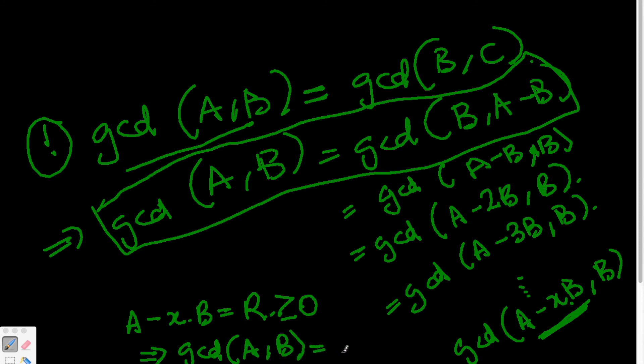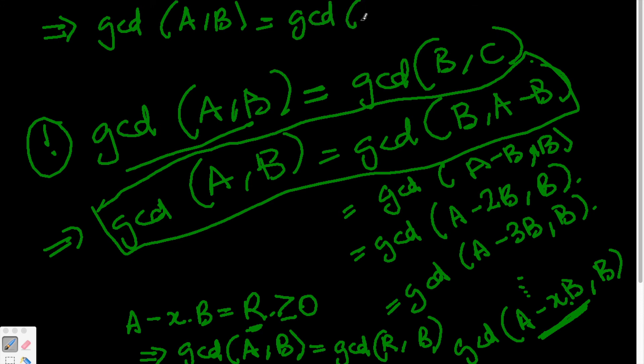So gcd(A,B) turns out to be gcd(R,B). That in turn tells you that gcd(A,B) equals gcd(B,R), of course just swapping the variables,